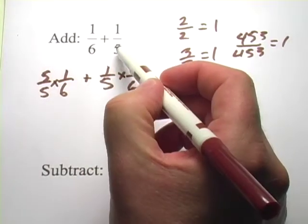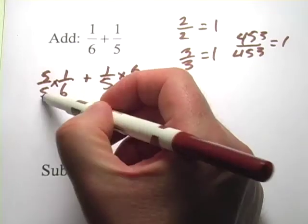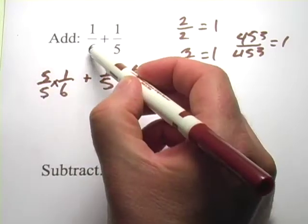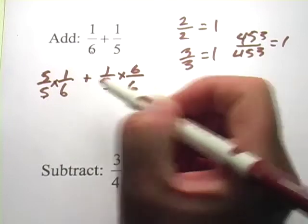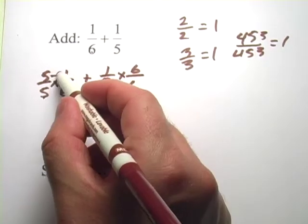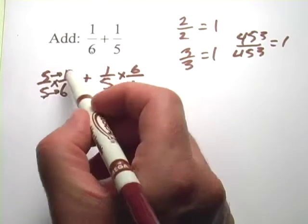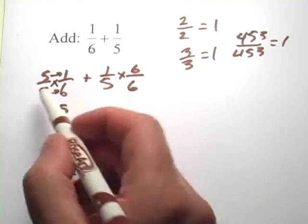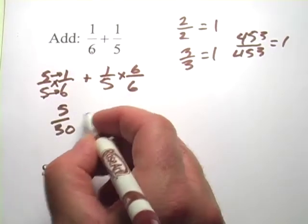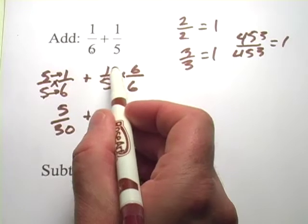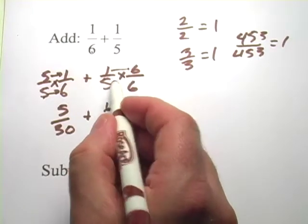And the trick here is that this denominator tells me what fraction to use here, and this denominator tells me what fraction to use here. Now when you multiply fractions, you multiply across the top and across the bottom. 5 times 1 is 5, 5 times 6 is 30. And same here. 1 times 6 is 6, and 5 times 6 is 30.